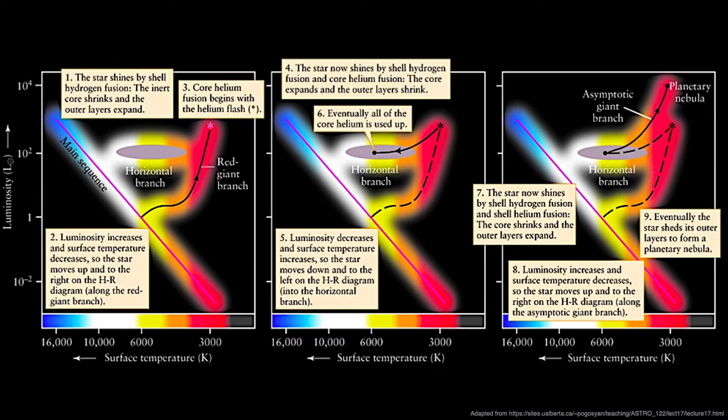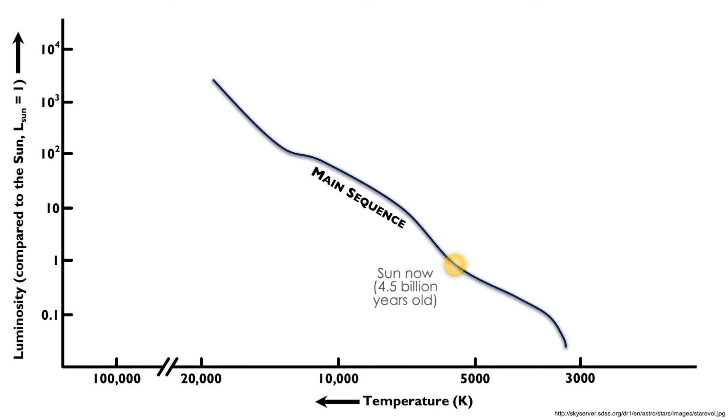Eventually, the star sheds its outer layers, forming a planetary nebula that surrounds that exposed core. We can watch this again in action by observing the post-main sequence evolution of our Sun as it enters its latter stages of life.